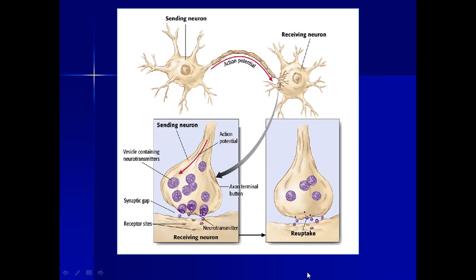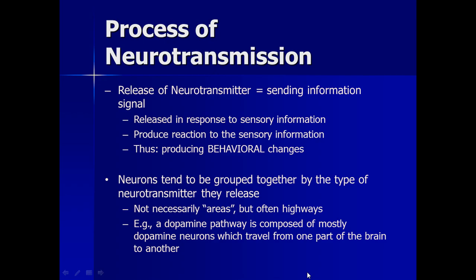These two pictures just summarize the process that occurs during neurotransmission. Neurons tend to travel in groups and not necessarily in areas but often highways. For example, groups in the central nervous system are called tracts, and in the peripheral nervous system they are called nerves.